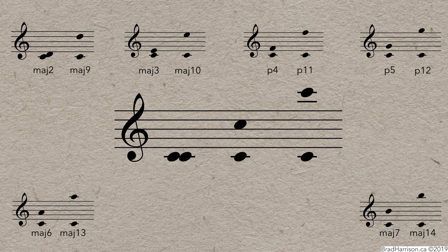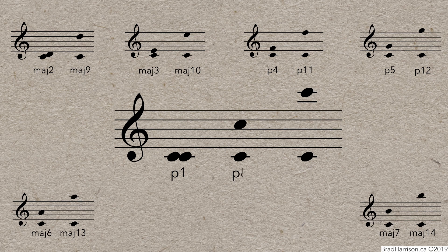And the major 7th is related to the major 14th. Finally, the perfect unison and octave are related to the perfect 15th. Or, as I like to call it, dabachtia, the destroyer.